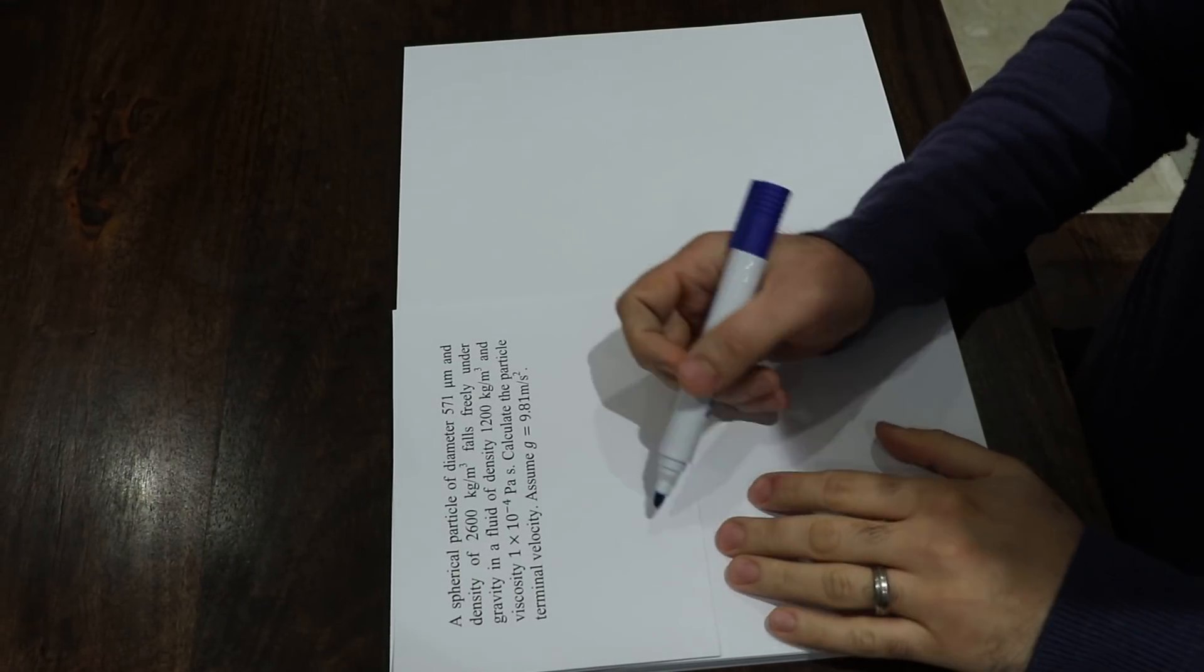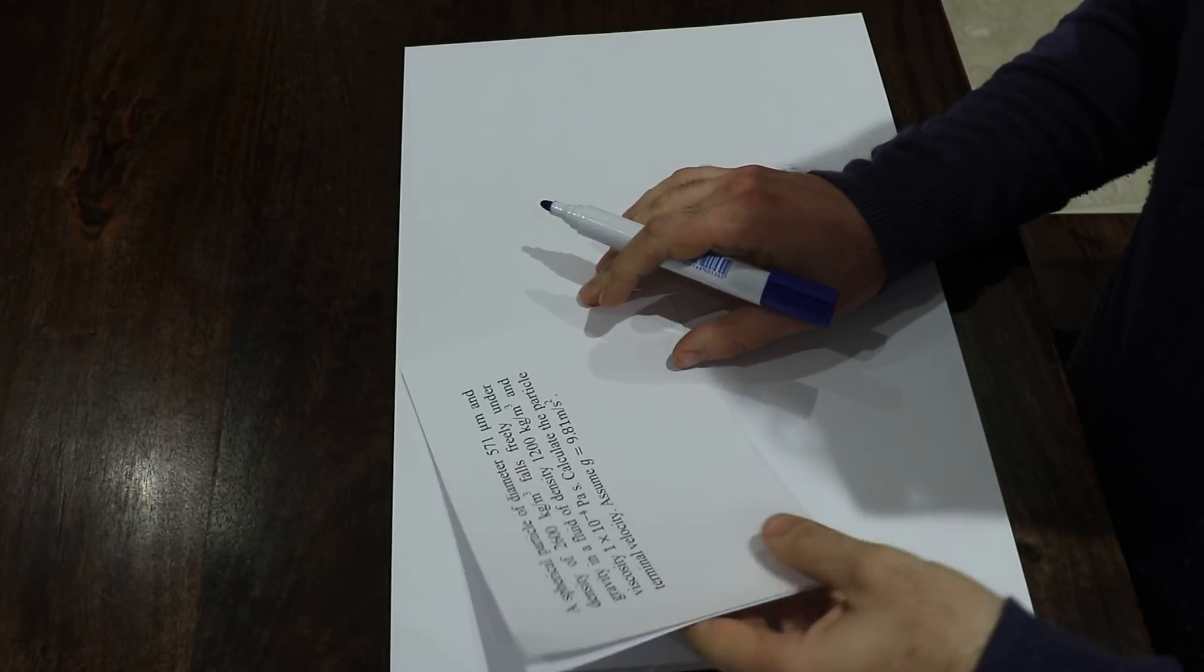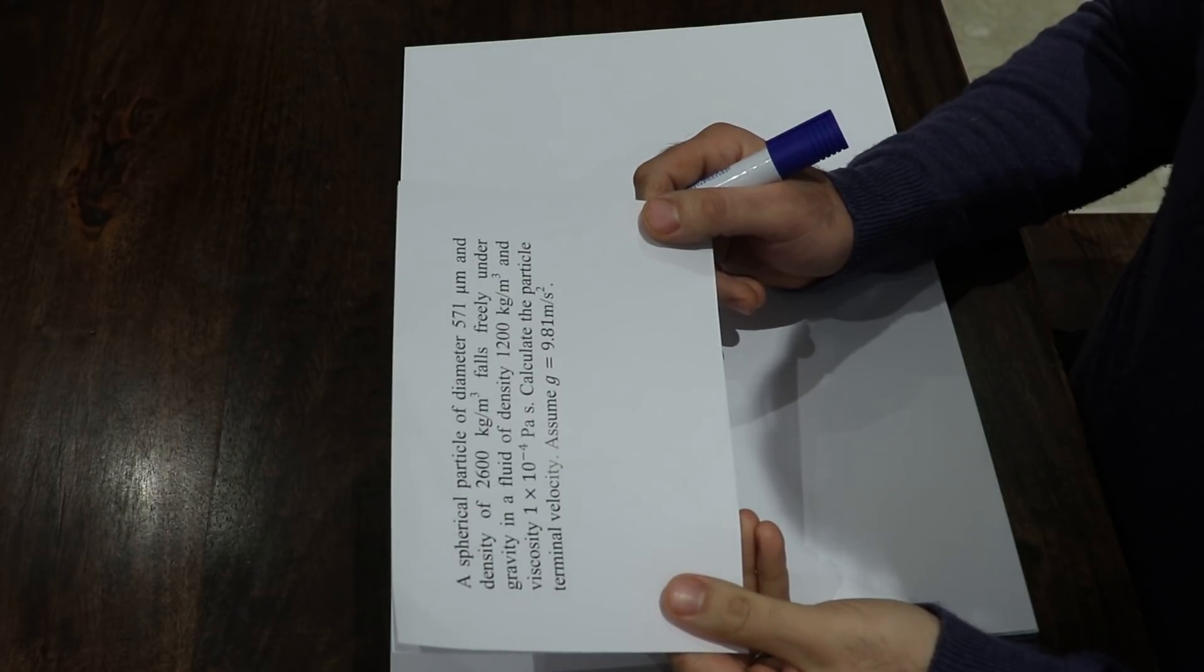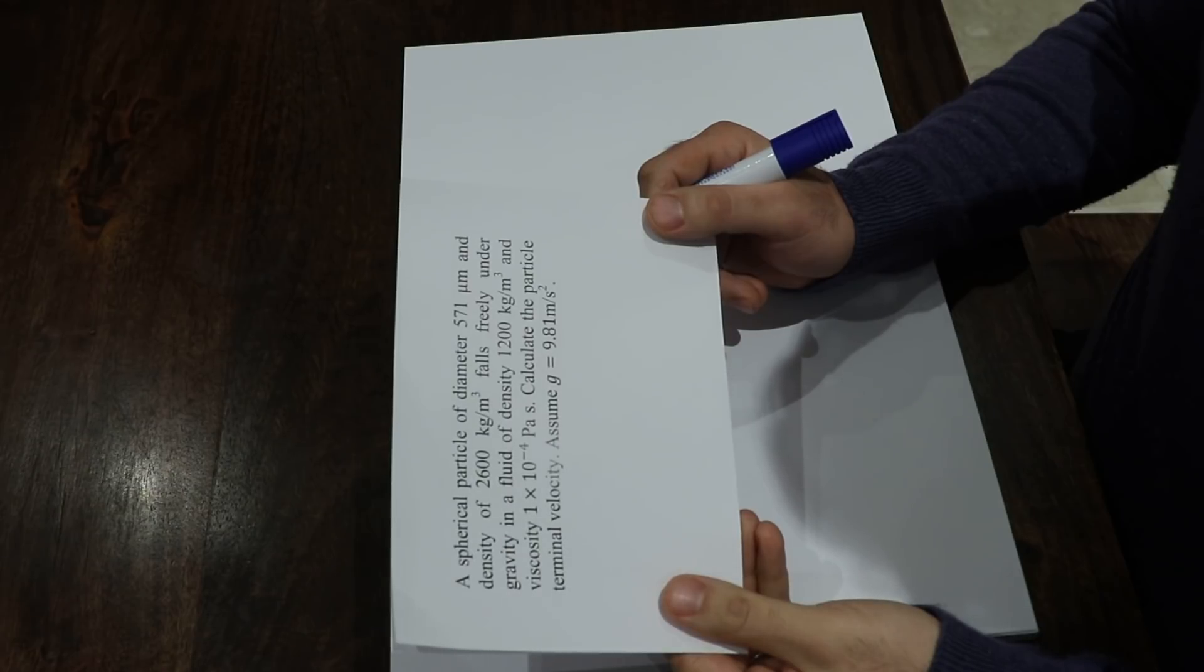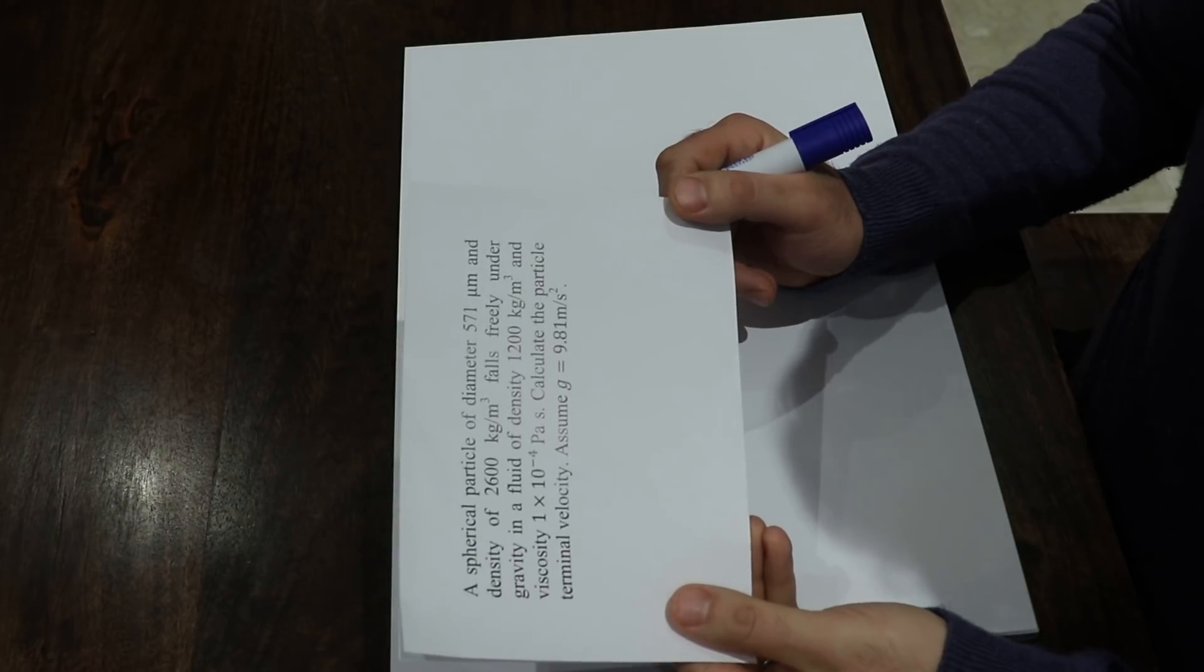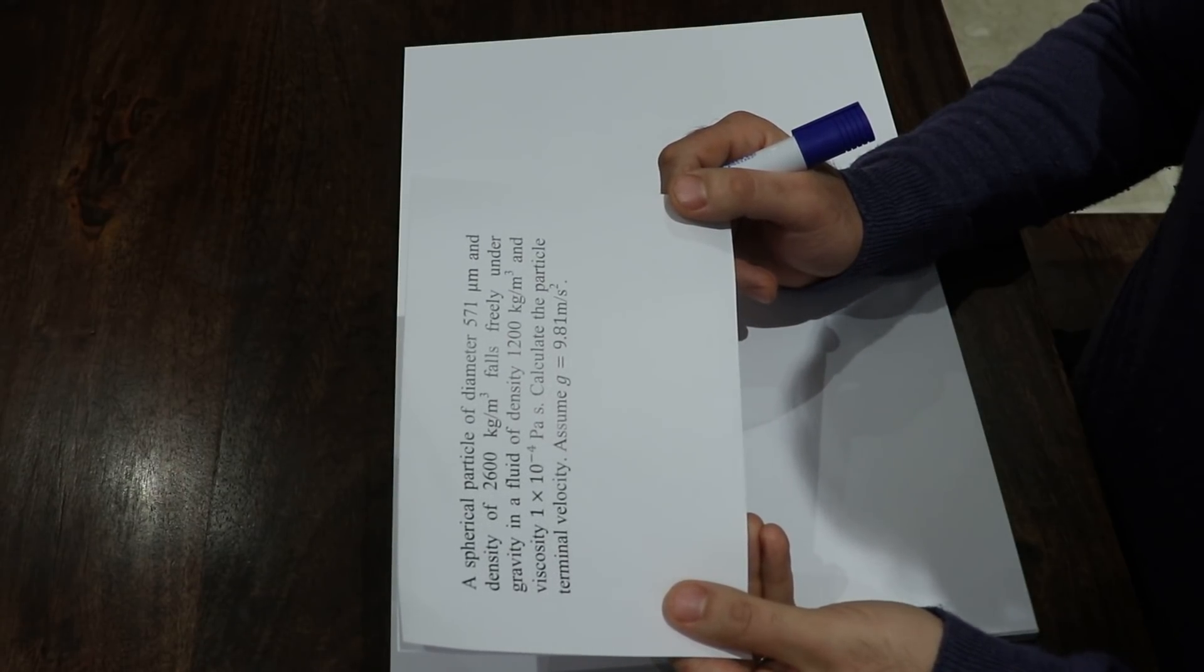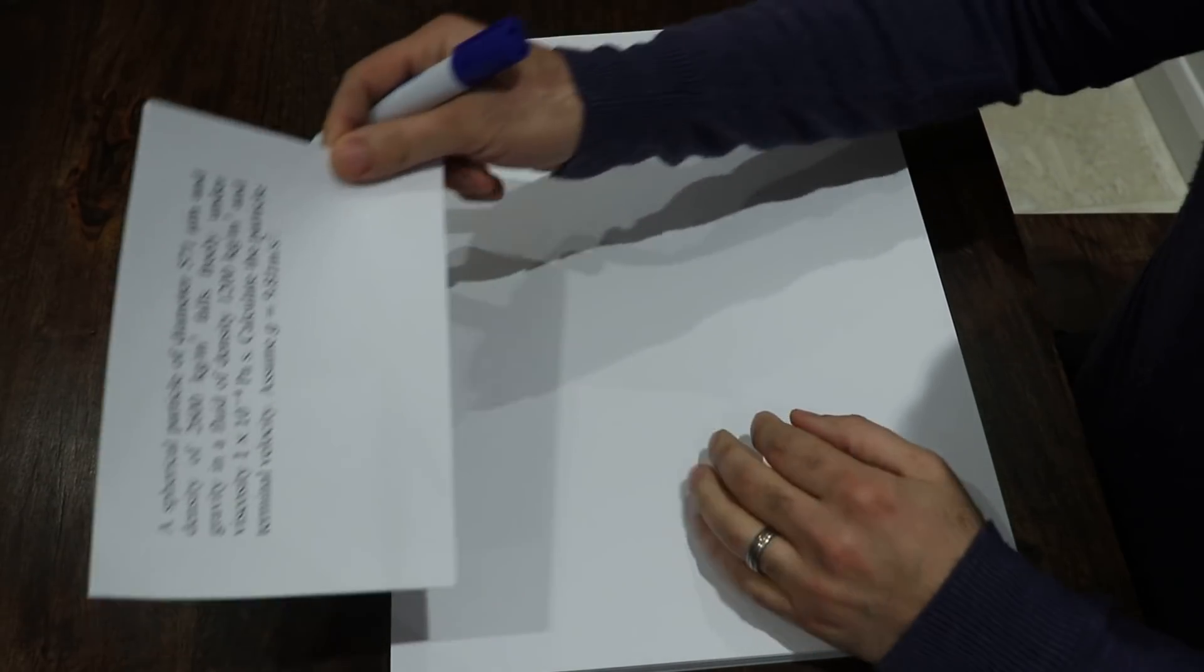Hello, this question is about particle motion in fluid. A spherical particle of diameter 571 micron and density of 2600 kilogram per cubic meter falls freely under gravity in a fluid of density 1200 kilogram per cubic meter and viscosity 1 times 10 to the minus 4 Pascal second. Calculate the particle terminal velocity. Assume g is equal to 9.81 meter per second square.